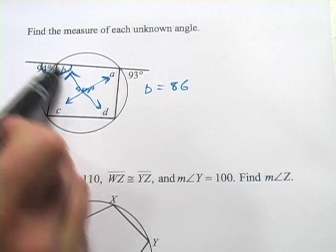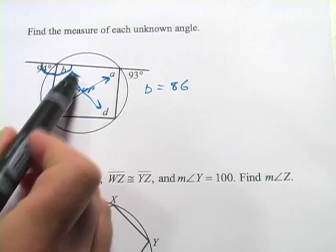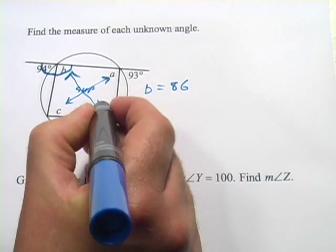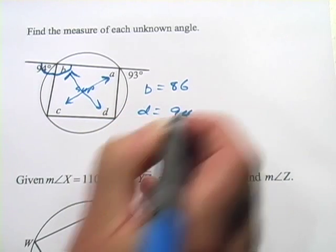Since these are supplementary, we're doing the opposite math. We're going to subtract that back from 180 and you'll get 94 again. So D equals 94.